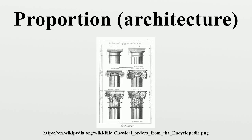In classical architecture, the module was established as the radius of the lower shaft of a classical column, with proportions expressed as a fraction or multiple of that module. In his Le Modulor, Le Corbusier presented a system of proportion which took the golden section and a man with a raised arm as the scalable modules of proportion.